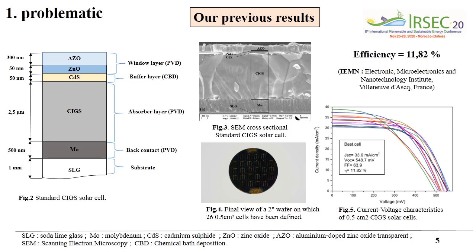In our previous results, the sputtering technique was used for the deposition of all layers except for the cadmium sulfide layer, which was deposited using the Chemical Bath Deposition process (CBD). This achieved 11.82% efficiency.